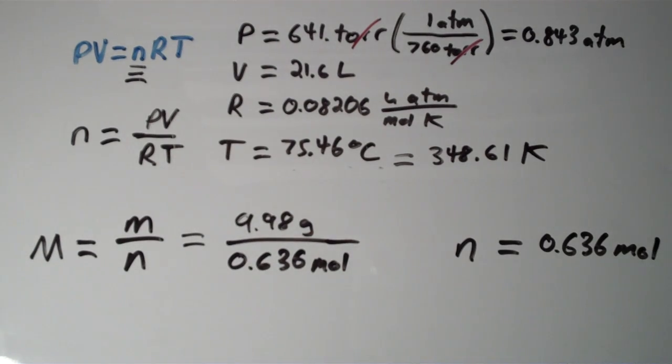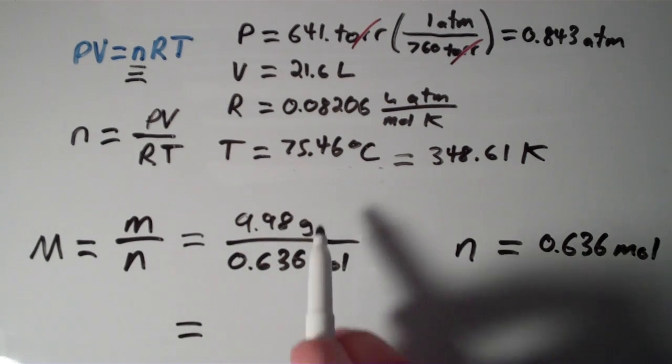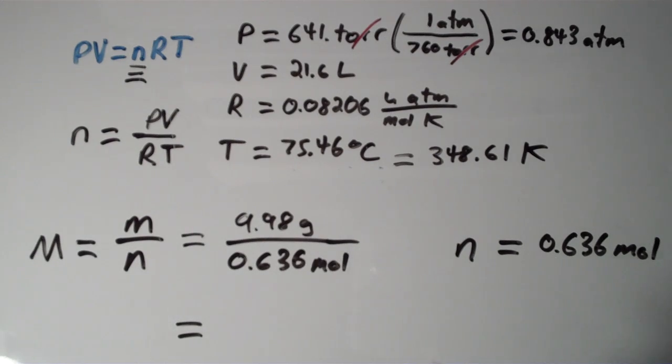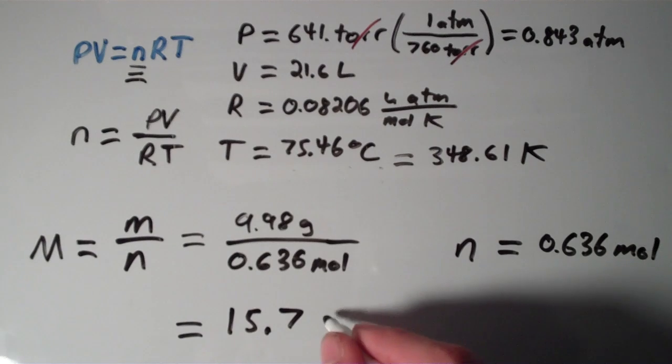And we end up getting, well with the correct number of sig figs, which in this case is 3, both this number and this number have 3 significant figures, is 15.7 grams per mole.